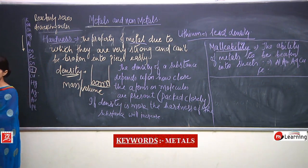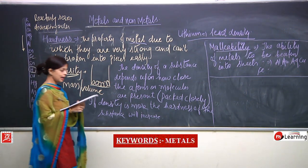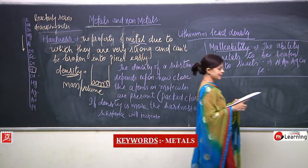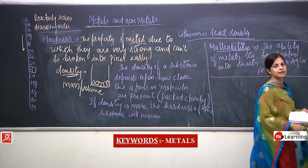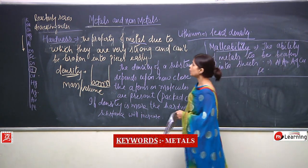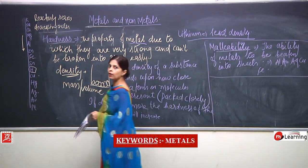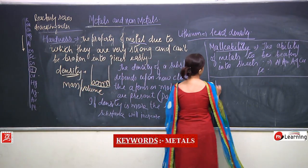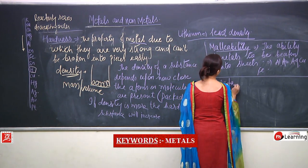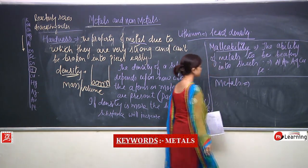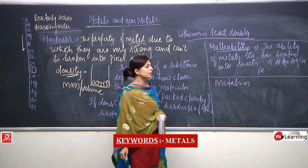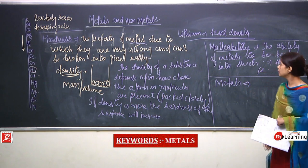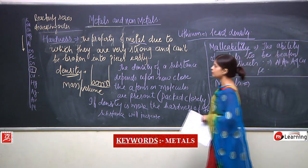Next we are reading in continuation: metals, metalloids, and non-metals. While discussing elements, we discussed how elements can be divided into three types. Now I will write the properties of metals, non-metals, and metalloids.